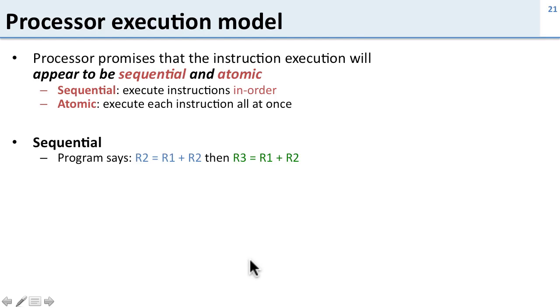Let's take a look at some examples. We have a program that says first do R2 = R1 + R2 then do R3 = R1 + R2. Doing it sequentially means the processor is not allowed to flip it and do the second instruction before the first instruction. In this case you'll get the wrong result.